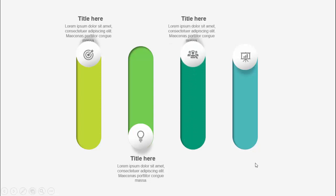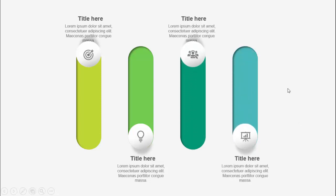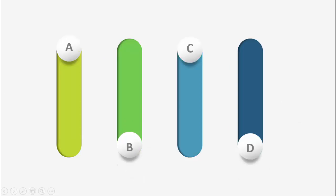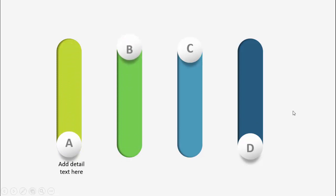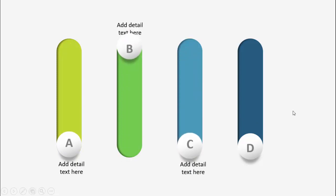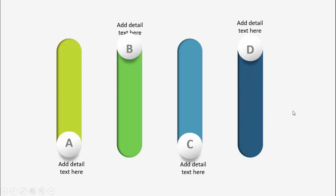When I click the second one it comes down and reveals the option and the title, then comes the third and the fourth. Likewise, I have created one more slide where I have put options A, B, C, D. When I click A the text will come, then B the text will come at top, C, then D. Depending on your requirement you can choose the slide.